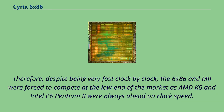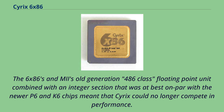As a result, the P5 Pentium significantly outperformed other CPUs in Quake. Therefore, despite being very fast clock-by-clock, the 6x86 and Mi were forced to compete at the low end of the market, as the AMD K6 and Intel P6 Pentium II were always ahead on clock speed. The 6x86's old-generation 486-class floating-point unit, combined with an integer section that was at best on par with the newer P6 and K6 chips, meant that Cyrix could no longer compete in performance.